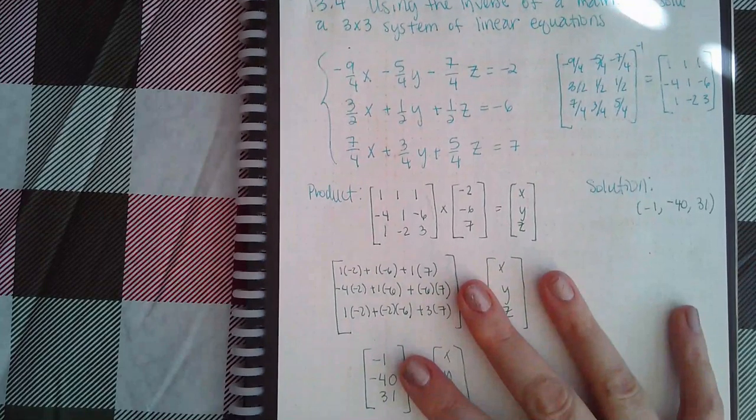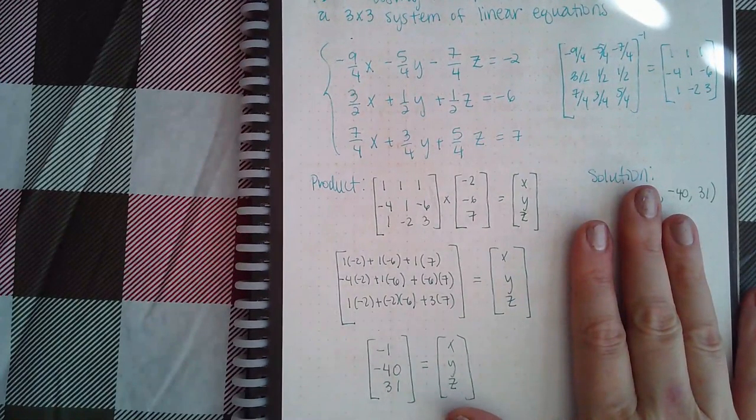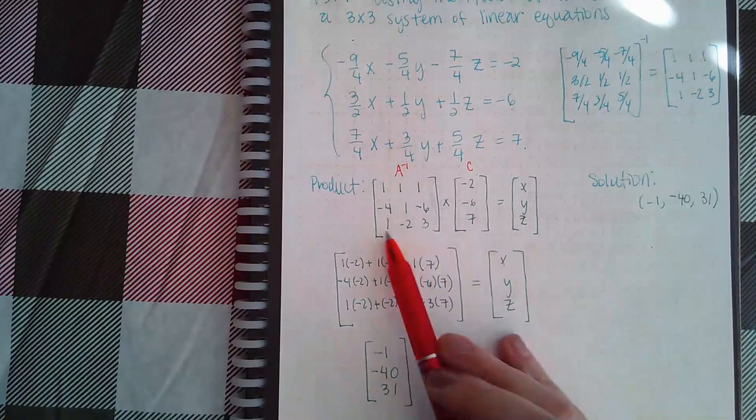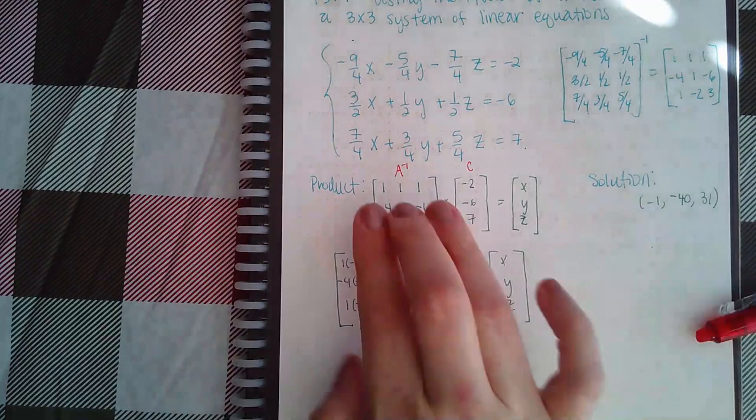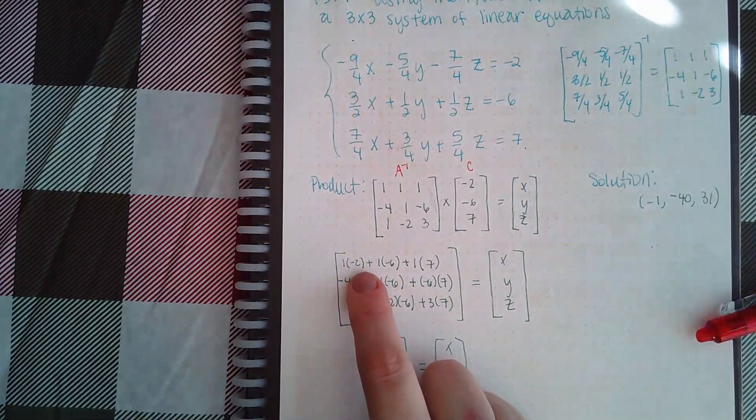But they did want us to write the product. The product would be that inverse function times the constants, so negative 2, negative 6, 7, and this inverse function just as they gave me. That whole product should equal the xyz.